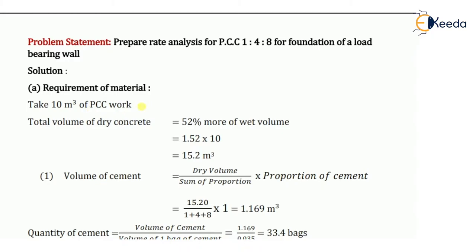If it is RCC, which is again measured in cubic meters, you will assume 10 cubic meters of RCC work. But if it is in square meters — for example, plaster work is measured in square meters — you will assume 100 square meters of plaster work. The standard values for labor are based on 10 cubic meters and 100 square meters of work respectively.